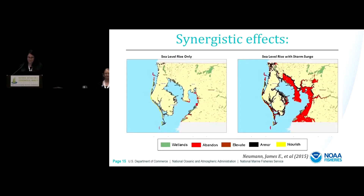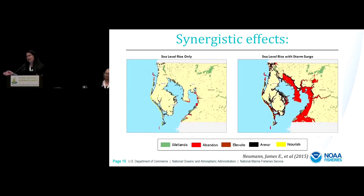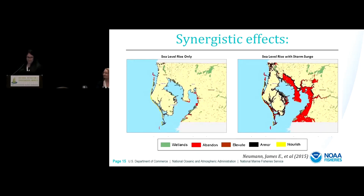Here's an example from a 2015 publication that looked at infrastructure with respect to climate change — a map of the Tampa area examining sea level rise effects on housing. Areas recommended for abandonment looking only at sea level rise are colored red. However, when you look at the synergistic effects of sea level rise combined with storm surge, the areas that would have to be abandoned are substantially increased. Taking these synergistic relationships into account is critical.